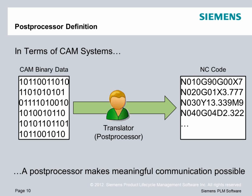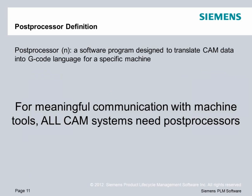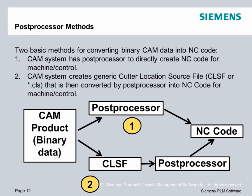So in terms of CAM systems, a post-processor is a translator to take that binary data from the CAM system and turn it into NC code for that particular machine. Without the post-processor, meaningful communication to the machine tool is not possible. A post-processor definition is a software program designed to translate CAM data into G-code language for a specific machine. And as I mentioned before, for meaningful communication with a machine tool, all CAM systems need post-processors. There are two basic methods for converting this binary CAM data into NC code: a one-step method and a two-step method.